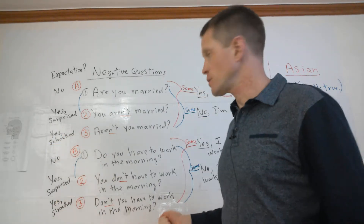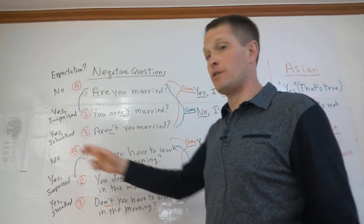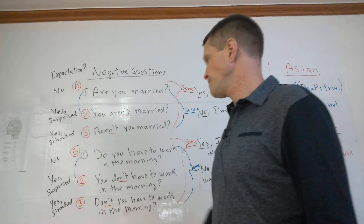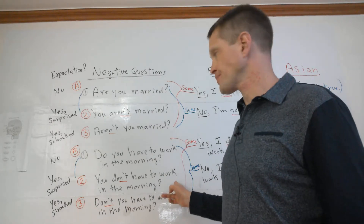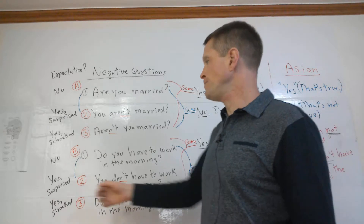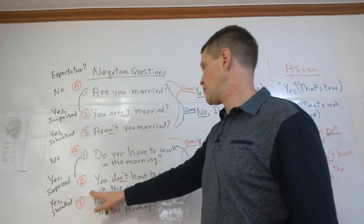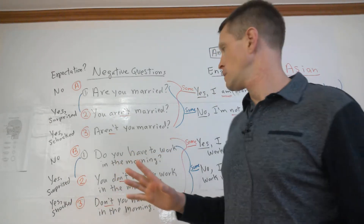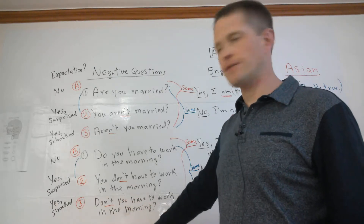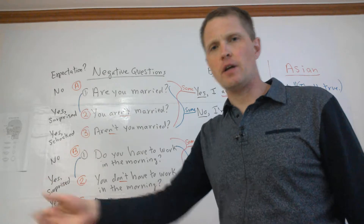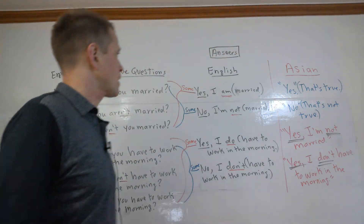Now let's look at the second set of examples. 'Do you have to work in the morning?' — I have no idea, so I'm asking; it's either yes or no, no expectation. 'You don't have to work in the morning?' — I'm surprised, so I have an expectation. These two often go together: 'Do you have to work in the morning?' 'No I don't.' 'You don't have to work in the morning — I thought you did.' 'Don't you have to work in the morning? What are you doing watching TV all night or drinking?' — again, I have an expectation and I'm shocked.